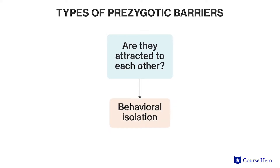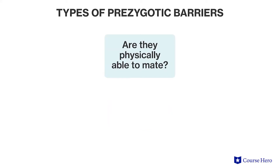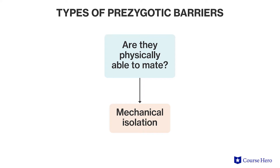Three: behavioral isolation. This occurs when two organisms are not sexually attracted to one another. This isolation may be as simple as not recognizing that the other individual is a potential mate. Four: mechanical isolation. This occurs when two organisms are not physically able to mate with one another. For example, if a bee doesn't fit into a flower in a way that allows it to capture pollen, the bee cannot deliver the pollen to another flower for proper pollination.